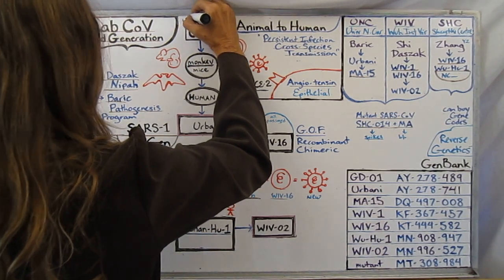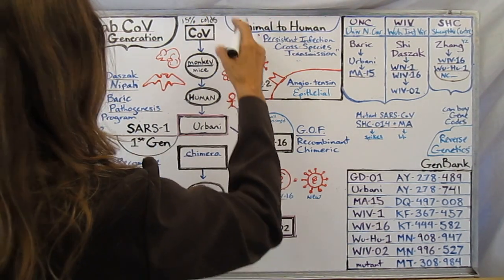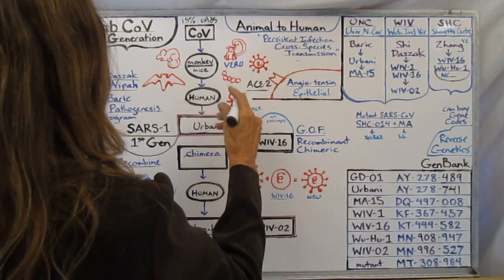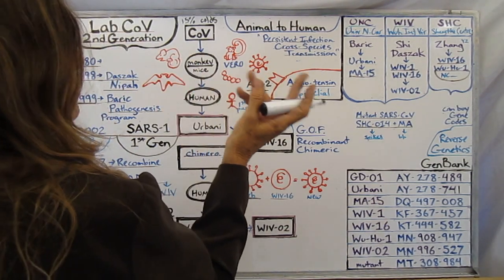Fifteen percent of colds were caused by the CoV. It was not able to infect cells through the ACE2 receptors, kind of used fusion, stayed kind of in the nose, came from cows and pigs.